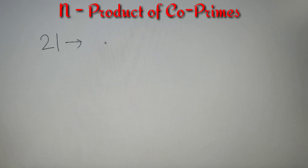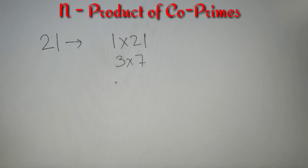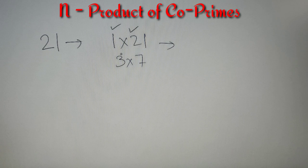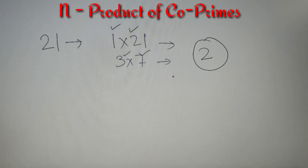Moving on to the topic of discussion for this video: writing a number as a product of two co-prime numbers. Suppose the number given to us is 21. Now 21 can be written as 1×21 and 3×7. We cannot write 7×3 and 21×1 because those are the same pairs. Checking which are co-prime pairs: 1 and 21 share only the common factor 1, and 3 and 7 also share only 1 as a common factor. So 21 can be written in two ways as a product of two co-prime numbers.